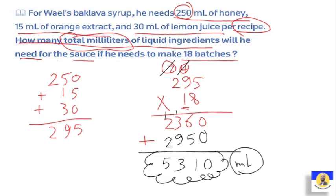So 5,310 milliliters is the total that he needs to make 18 batches.